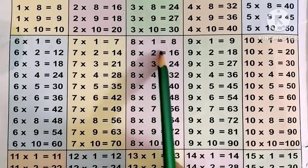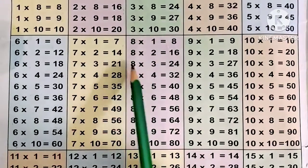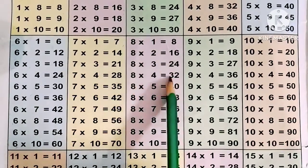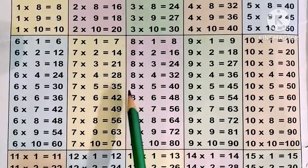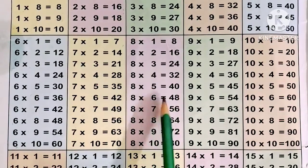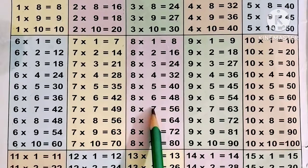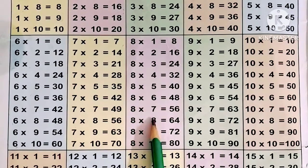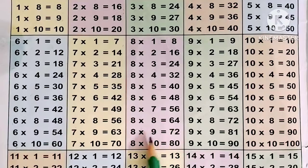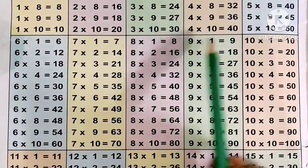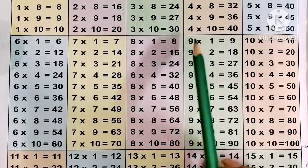Now the 8 times table. 8 ones are 8, 8 twos are 16, 8 threes are 24, 8 fours are 32, 8 fives are 40, 8 sixes are 48, 8 sevens are 56, 8 eights are 64, 8 nines are 72, 8 tens are 80.